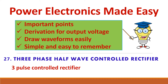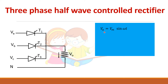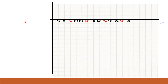Let us look at the three-phase half-wave controlled rectifier. Three phases VA, VB, VC are connected along with a neutral line that provides the return current path. It is a half-wave rectifier, so one thyristor is sufficient for each phase. VA is given by Vm sin(ωt), VB is Vm sin(ωt − 120°), and VC is Vm sin(ωt − 240°) or equivalently Vm sin(ωt + 120°).